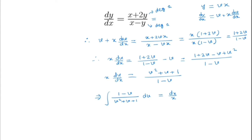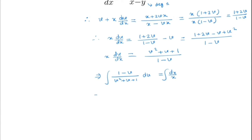Now we will take the integral of both sides. Note that we have the integral of (1 - v) / (v² + v + 1). The derivative of the denominator is 2v + 1, and here we have 1 - v. So we must write 1 - v in terms of (2v + 1).